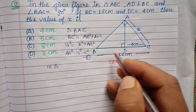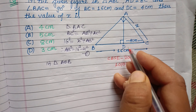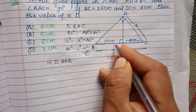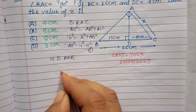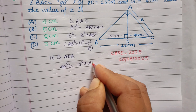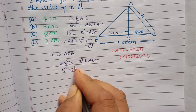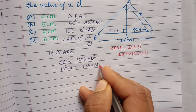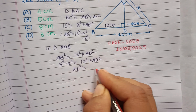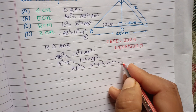Now we use right angle triangle ADB. Since BC is 16 and DC is 4, BD = 16 - 4 = 12 cm. Therefore AB² = 12² + AD², and substituting our first equation: 16² - X² = 12² + AD². So AD² = 16² - X² - 12². This is our second equation.